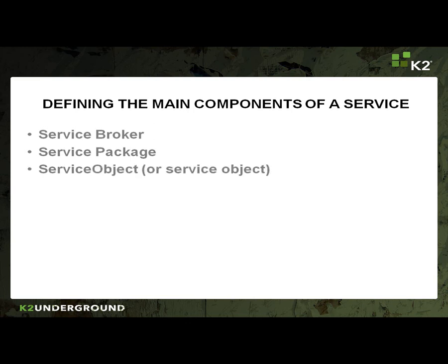Next, we have the service object. This will contain metadata about properties and methods that describe both data and type mapping between Smart Object data and back end system data. We also have service type, which describes methods and properties for exchanging data with back end systems. Service types are registered in the service broker console, and we will be going into this in our next video. The service instance is an instance of a service type that communicates with back end systems and is registered with the Black Pearl server.